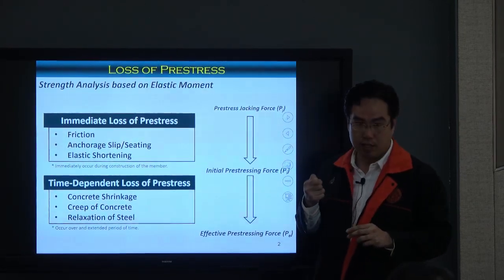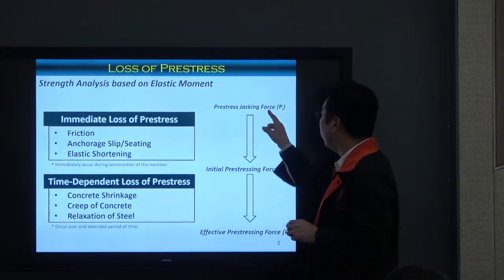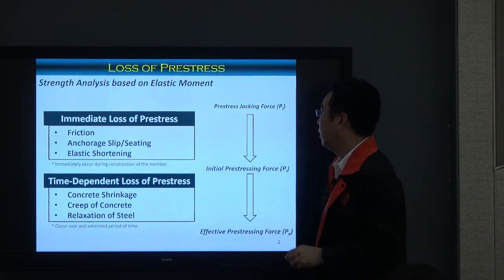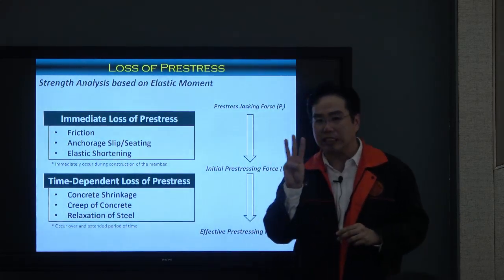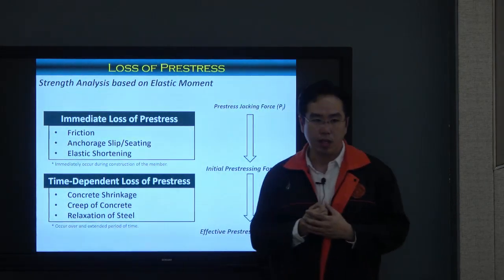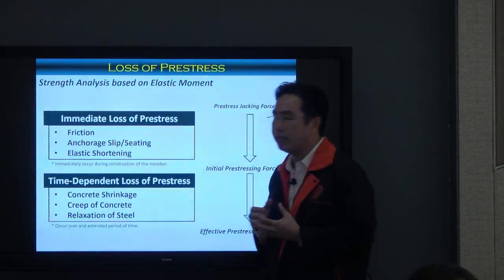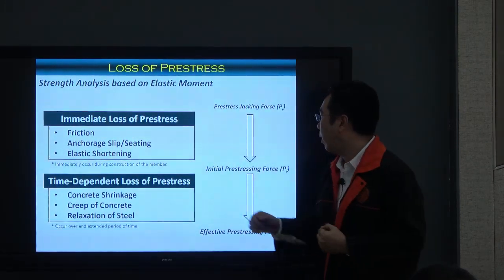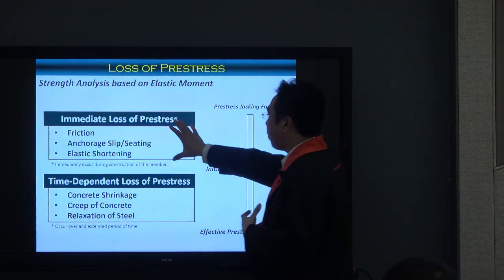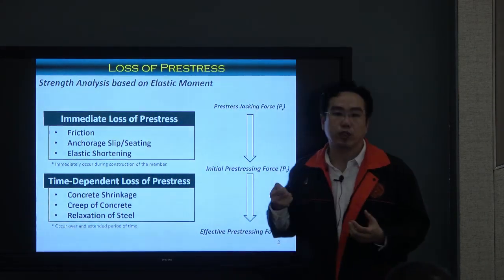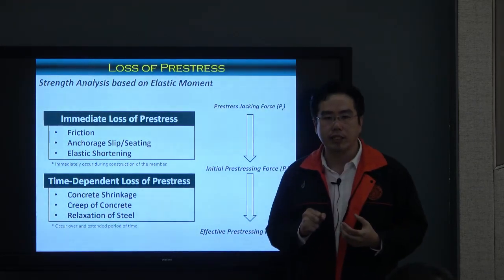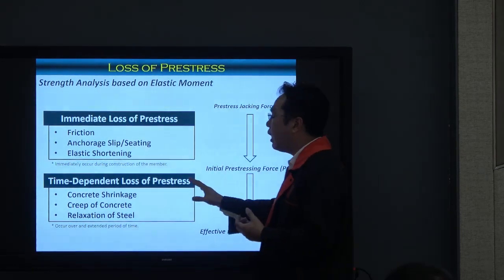The loss of pre-stress can be categorized into two groups. The first is called immediate loss of pre-stress, which occurs when you try to put the pre-stressing force in. The initial pre-stressing force PI is the result after you account for all of these immediate losses. In order to obtain the desirable PI, you need to put additional force in — called the checking force PJ — to compensate for the immediate loss.